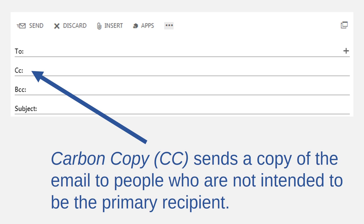For example, imagine you're working on a group project in a class and your instructor has asked you to submit the project via email. On the day you submit it, you might write an email to the teacher and attach your project, then include all of your partners' email addresses in the carbon copy field. That way, they'll get the email and can see that you submitted the project on time. When they receive the email, they will see that they're in the CC field instead of the To field, and will know immediately that they are not the primary recipients.